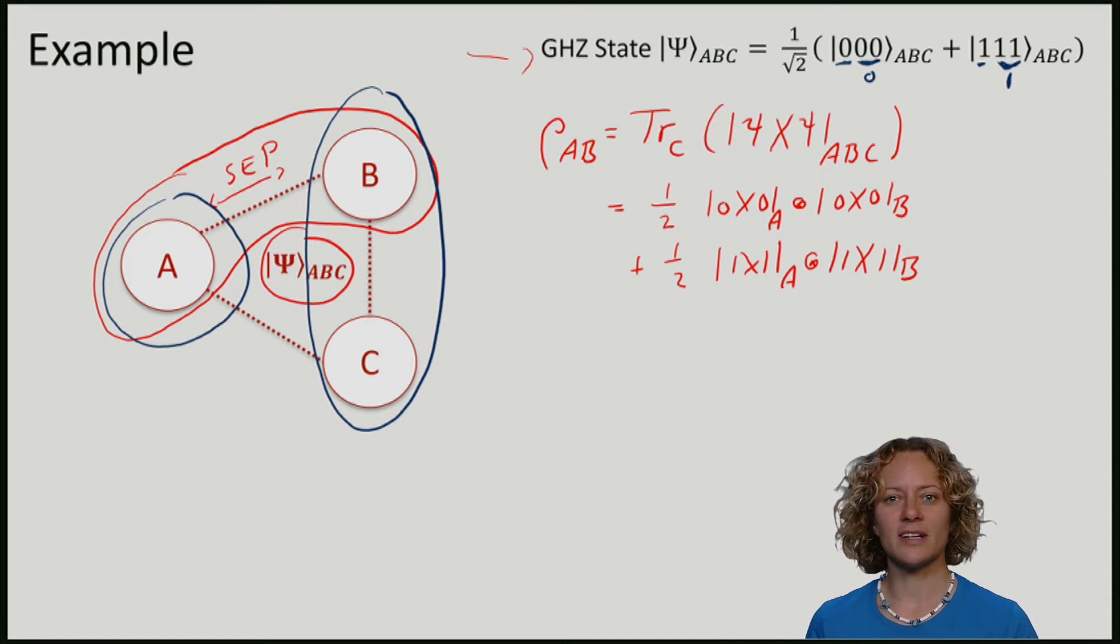And if I start with the EPR pair between A and B, I can apply a C-NOT operation, a unitary, to B and C to obtain the GHZ state.